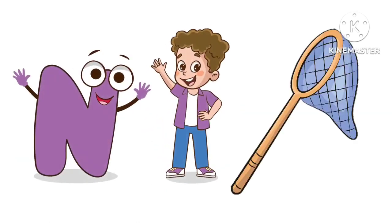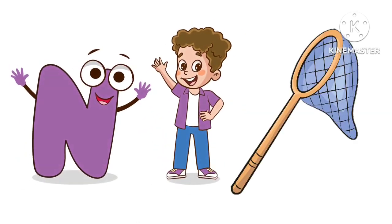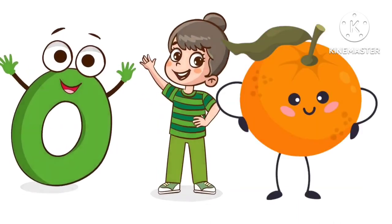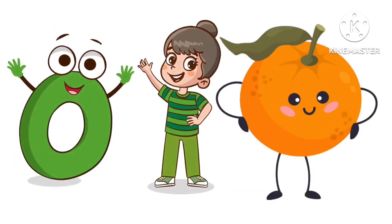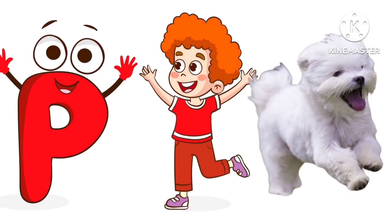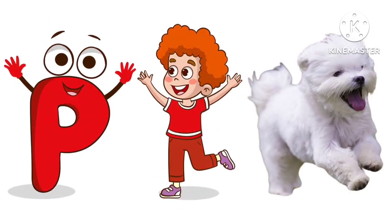N is for Net, N-N-Net. O is for Orange, O-O-Orange. P is for Pet, P-P-Pet.